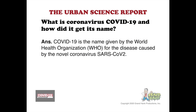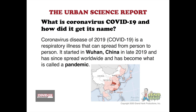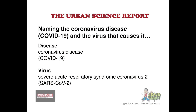COVID-19 is the name given by the World Health Organization on February 11th, 2020 for the disease caused by the novel coronavirus SARS-CoV-2. Coronavirus disease of 2019, in other words COVID-19, is a respiratory illness that can spread from person to person. It started in Wuhan, China in late 2019, and since then has spread worldwide and has become what is called a pandemic. The official names are: as far as the disease is concerned, it's the coronavirus disease, COVID-19.